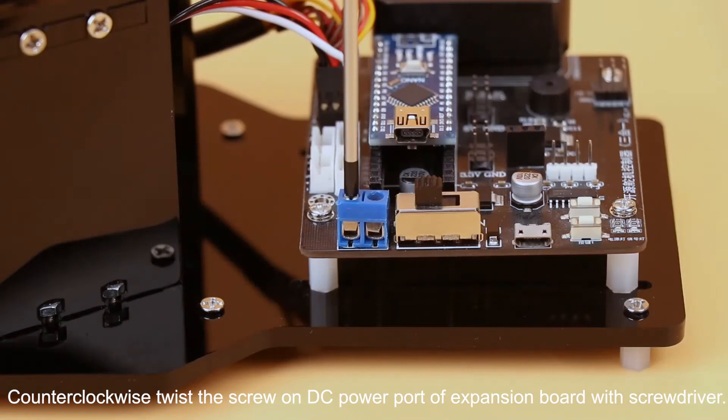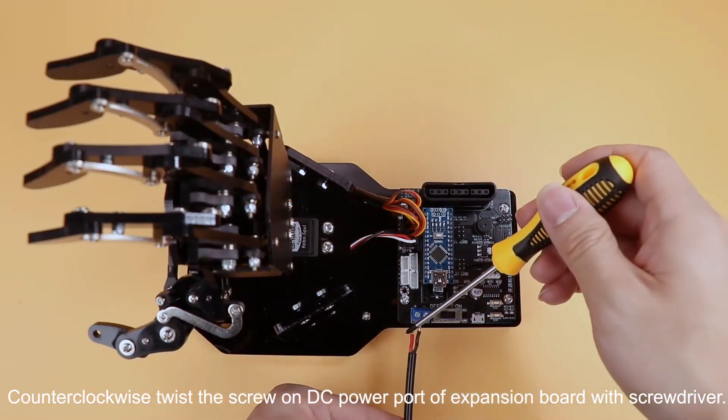Clockwise twist the screw on DC power port of expansion board with screwdriver.